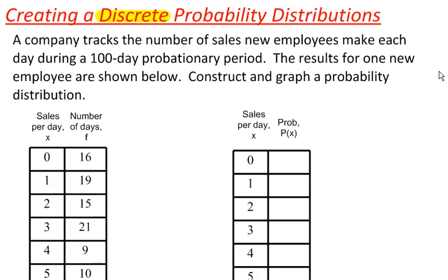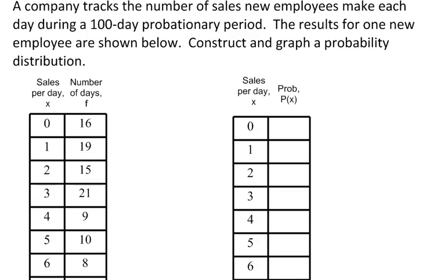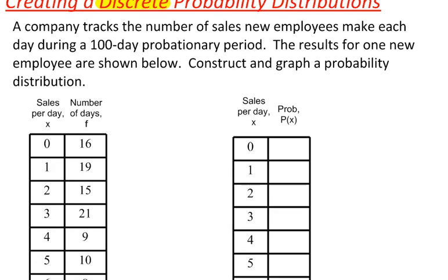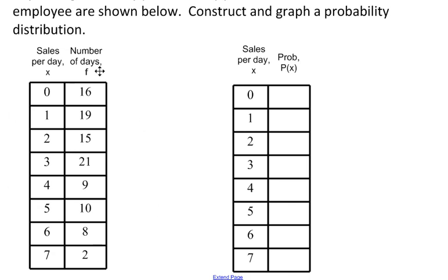So we've collected data. We've got a probability experiment, and this is just the number of sales per day for a particular worker at this company. So let's take a look at this table. We need to understand what this table means before we can start to set things up.